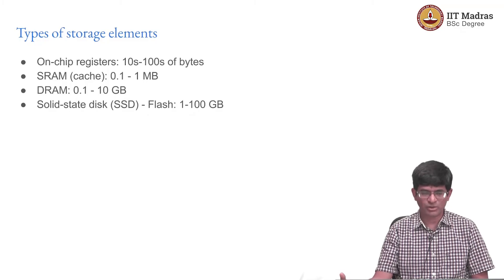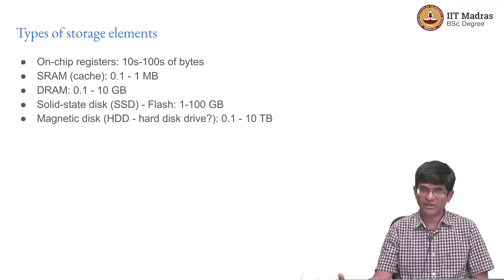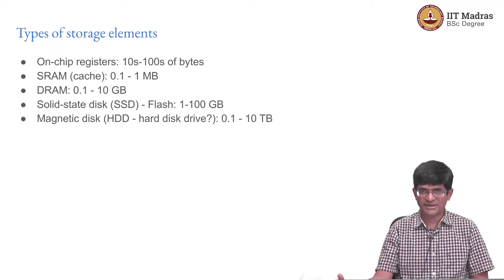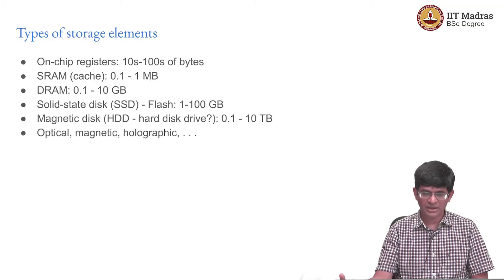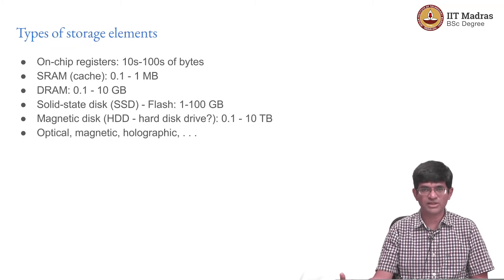And then you have magnetic disks — the actual storage, the hard disk, which is used in PCs. This is typically these days on the order of terabytes; you could have even like a 10 terabyte disk, although more common is probably 2 to 4 terabytes on most systems. You can go beyond this — there are memory storage technologies capable of storing even hundreds of terabytes or petabytes of data.